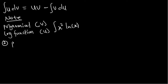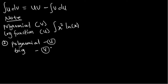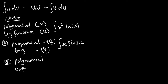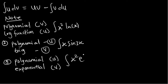Second, if you have a product where one factor is a polynomial and the other is a trig function, make the polynomial your u and the trig function your dv. For example, integral of x·sin(3x). Third, when you have a polynomial and an exponential function, choose u to be the polynomial and dv to be the exponential. For example, integral of x²·eˣ dx.